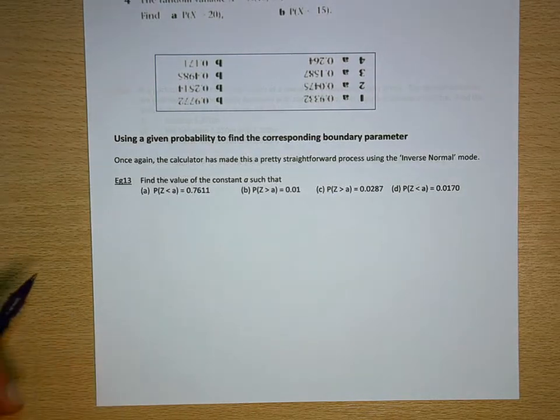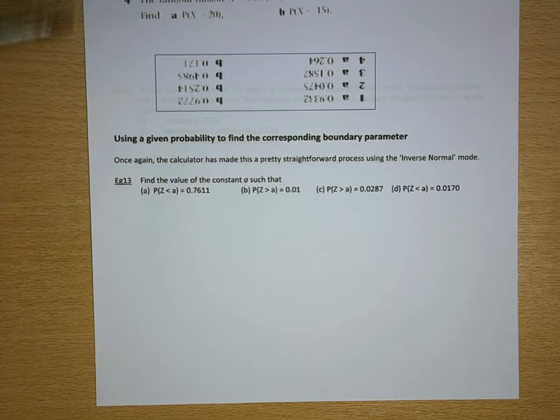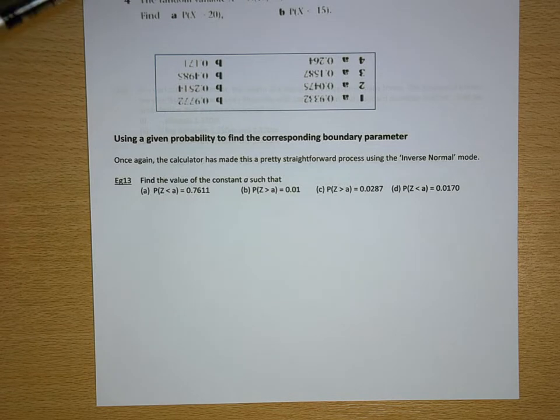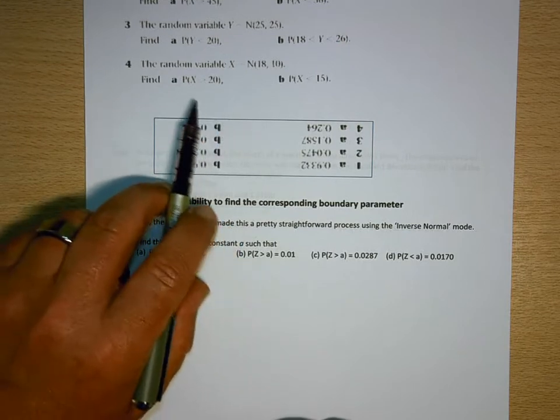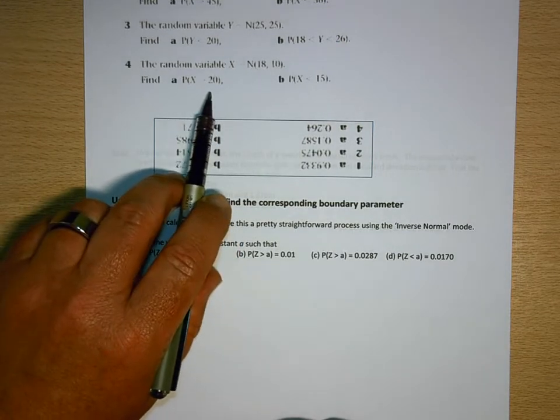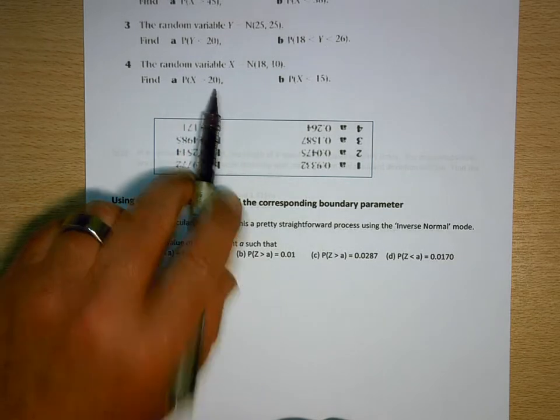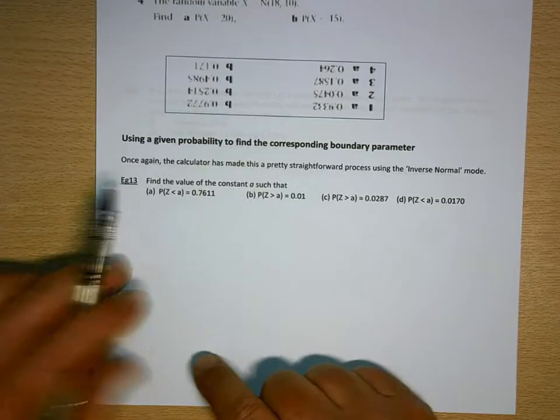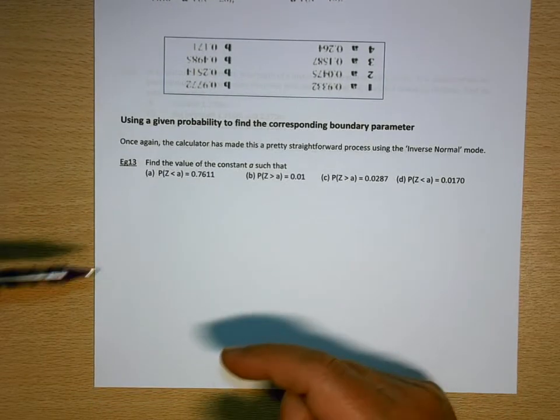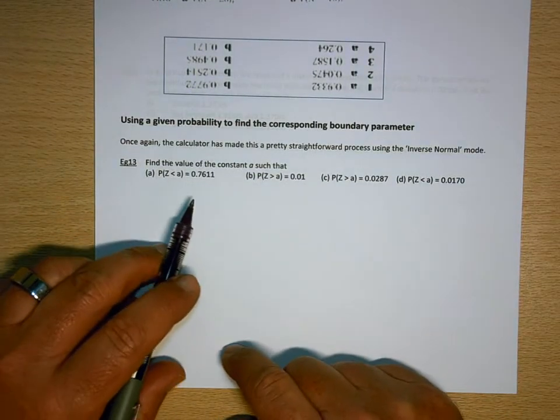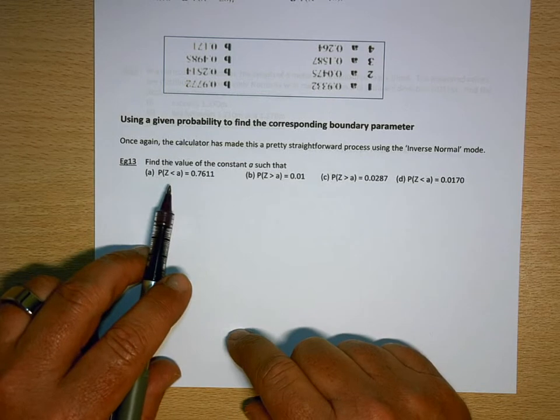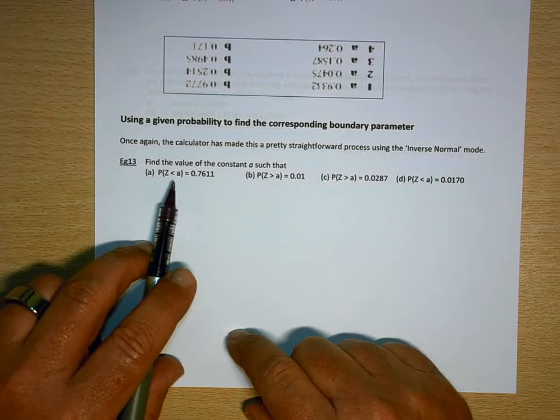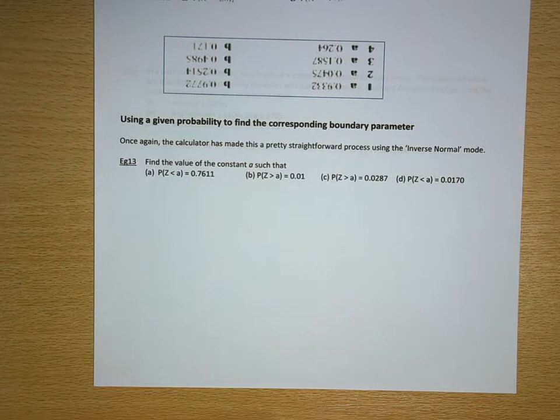In the next few examples, we're going to reverse the process that we've used with normal distribution up to this point. Up to this point, we were using the normal distribution to find an area or a probability for a given boundary condition. So for example, x is greater than 20 or whatever. In these examples, we'll be reversing that. We'll be given a probability, so given the area of the part of the normal distribution that we're interested in, and reversing it to find what boundary condition provides that area.